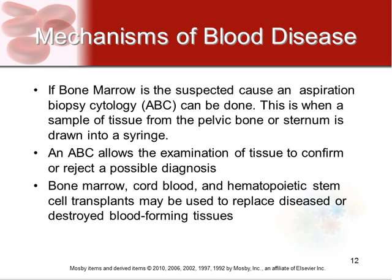If bone marrow is suspected as the cause of a blood disease, a biopsy is done — they aspirate a small amount of bone marrow using a large needle inserted into the bone, most commonly the pelvic bone or sometimes the sternum. This allows them to examine the tissue and evaluate the marrow's structure. If marrow is found to be the problem, treatments include bone marrow transplant, cord blood transplant, or stem cell transplant to replace the damaged marrow so the patient can start making healthy blood cells again.